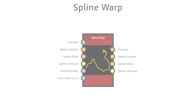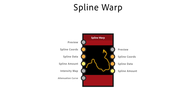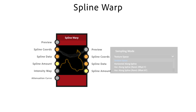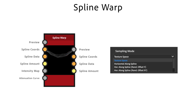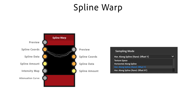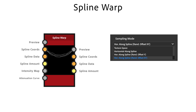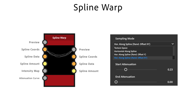The spline warp node displaces the splines based on an intensity or vector map. With sampling mode I have control over the mapping of the values to the splines. Texture space supplies the value in place. Horizontal along splines applies each row to a different spline, and horizontal along spline random offset x and y applies a random offset for each spline. Start and end attenuation are used to control the warping effect near the start and end of the spline. A value of 1 means that no warping is applied.